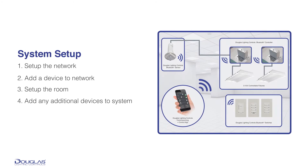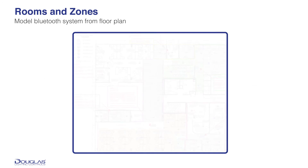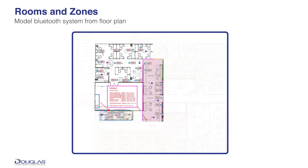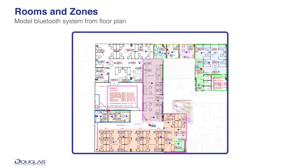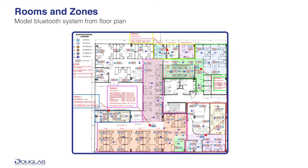The basic process for setting up a system is to set up the network, add a device to the network, set up the room, then add other devices to the network and room. It's good to have a plan as to how you want the system to be set up in terms of rooms and zones of control within those rooms. In most cases, your electrical floor plans have this drawn out. Use the information from your electrical plans to name your rooms and zones of control. Let's get started.